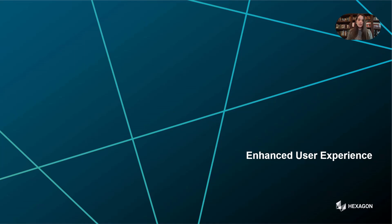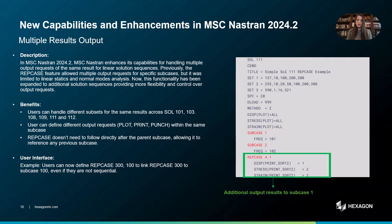Let's move on to the enhanced user experience section. In MSC Nastran 2024.2, we expand the multiple result output capabilities for linear solution sequences. This new capability enables users to make multiple output requests for the same result type. For instance, a user might want to output all element stresses to a results database file for a particular subcase using the command STRESS(PLOT)=ALL, while simultaneously printing or punching a subset of these stresses to the standard Nastran output files like the F06 or the punch file. This is now available from MSC Nastran 2024.2.